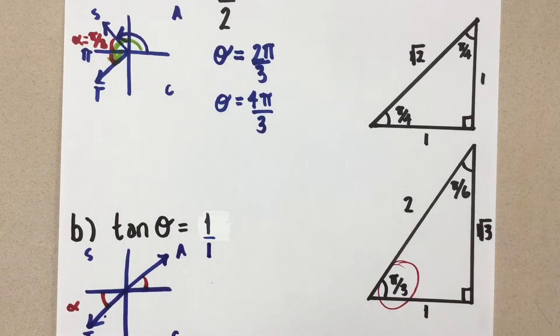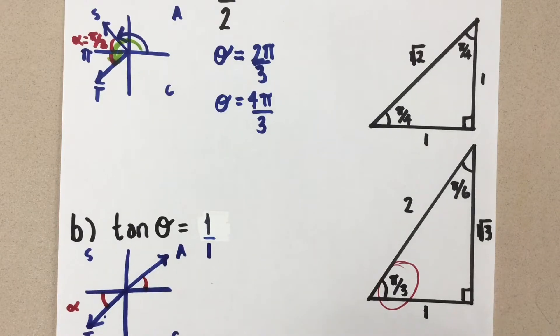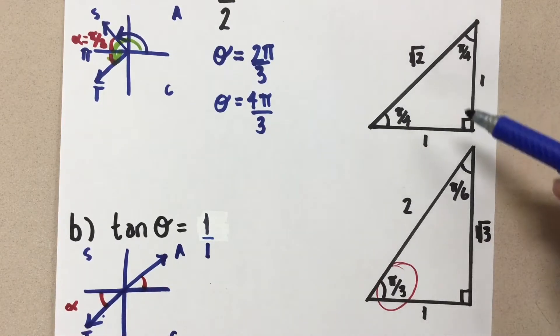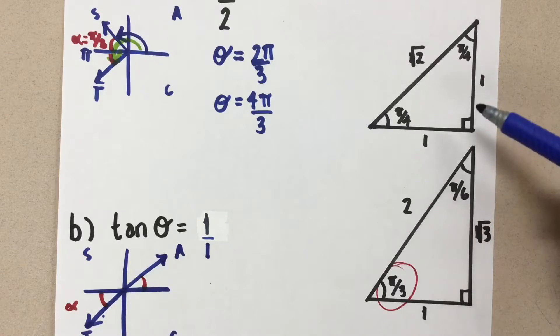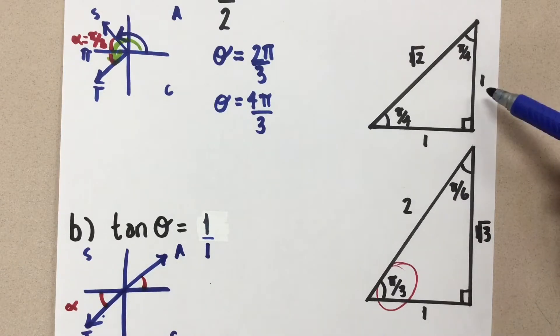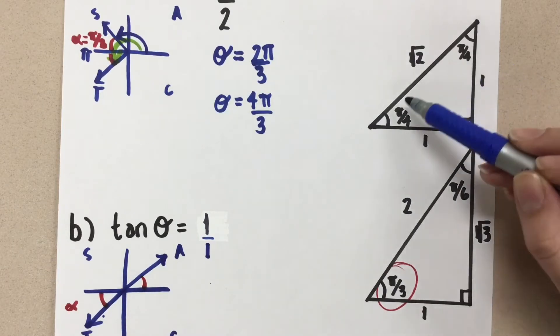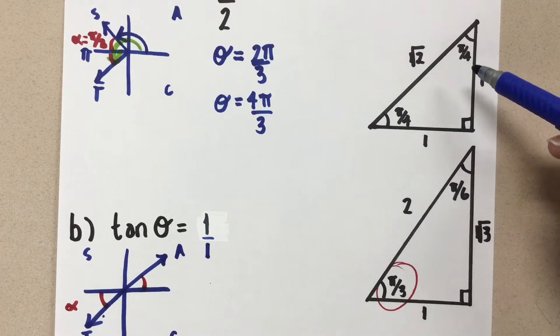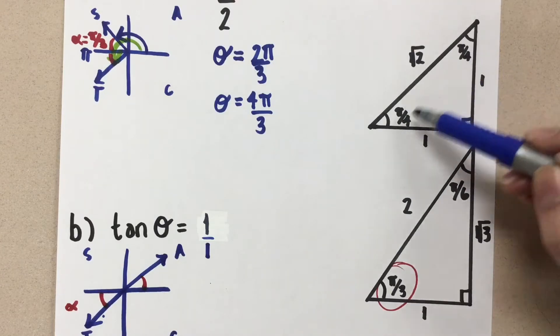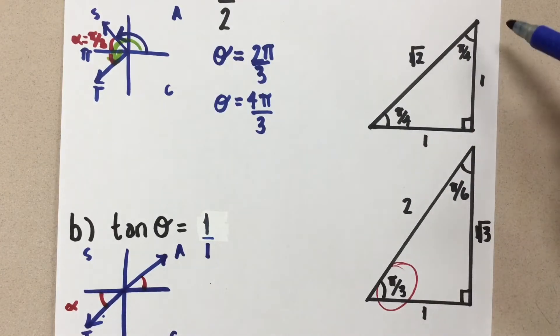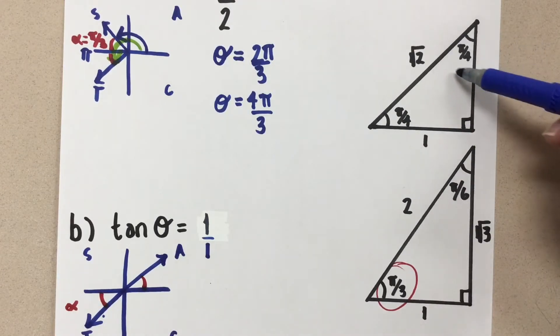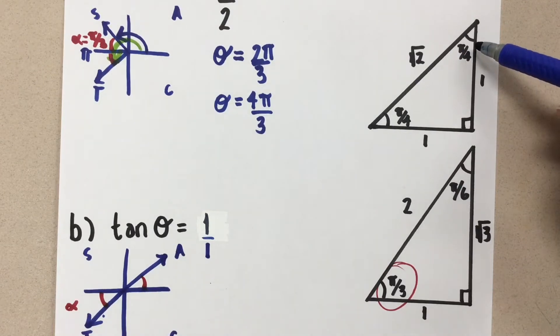And we know that the tangent ratio is opposite over adjacent. So I'm looking for tangent theta equal to one over one. So looking at the two special triangles here, this triangle will give us one over one. Notice how both of the angles here are π over four, because this is an isosceles triangle. So it doesn't matter now which one we choose. So this is a little easier than the last question. The angle is going to be π over four, we can check that.